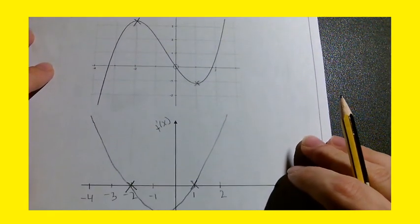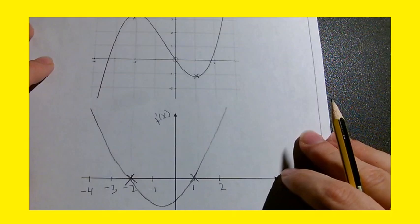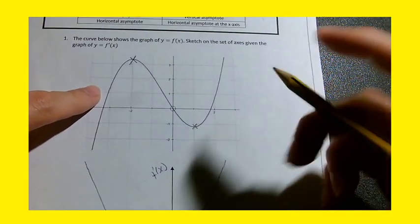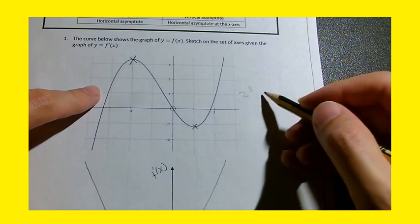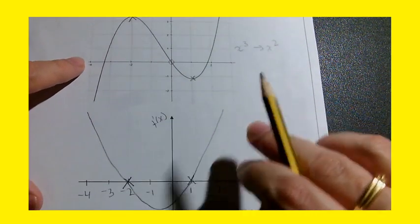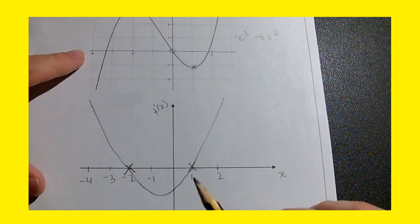As we clearly see the derivative graph is a quadratic. And that makes sense because this is a cubic. As we said before this would differentiate to a quadratic so that will give me an idea as to what the derivative graph will be.